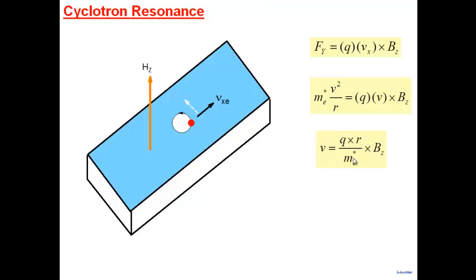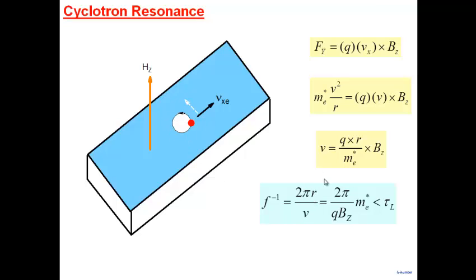Once the electron moves in a circular orbit, we shine light — a photon. If the frequency of this light matches the frequency at which the electron is rotating, a resonance occurs and the electron starts absorbing energy. The frequencies involved are typically in the microwave region. When the microwave frequency matches the cyclotron frequency, energy absorption occurs — measurable as reduced transmission through the sample.